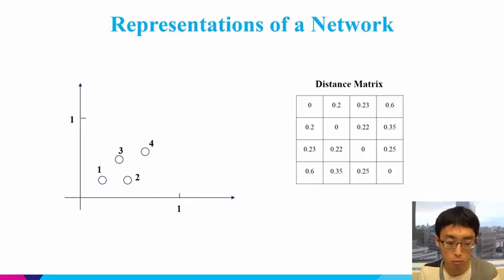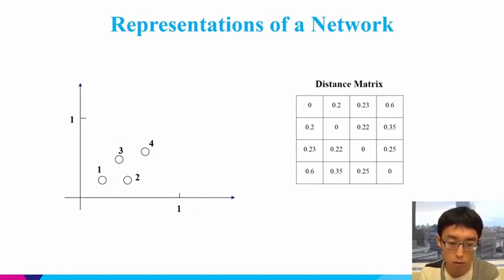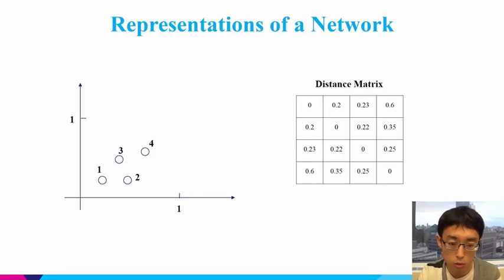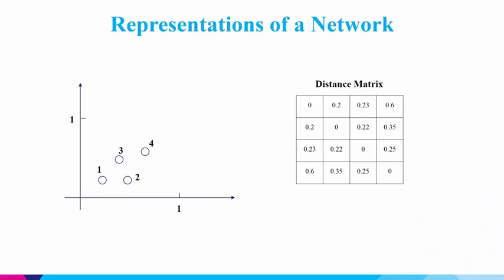Let's talk about some basics about the mathematical representation of a network. First, let's see what is the distance matrix. On the left are four circles on a two-dimensional space, labeled one to four. On the right, the distance matrix describes the relationships of these four circles in space. The distance matrix has four rows and four columns, all matched to the four circles.